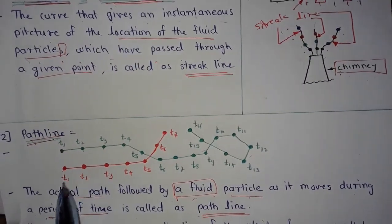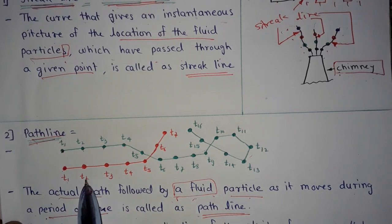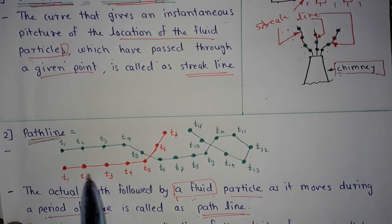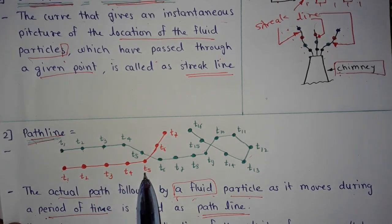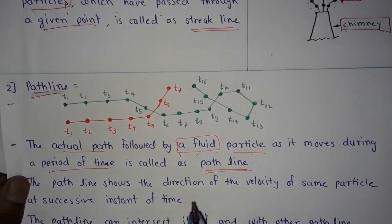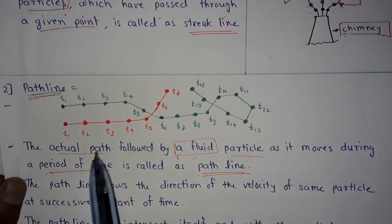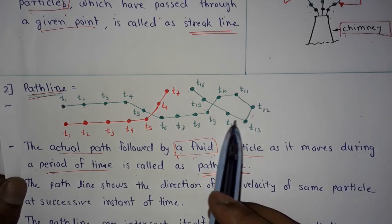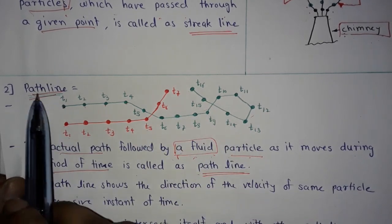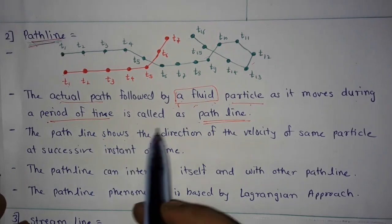Similarly, the red particle follows its own path — at t1 it is here, at t2 here, and at t3 here. These are the positions of the particle at different times. A single particle which follows a particular path or curve is called a path line.